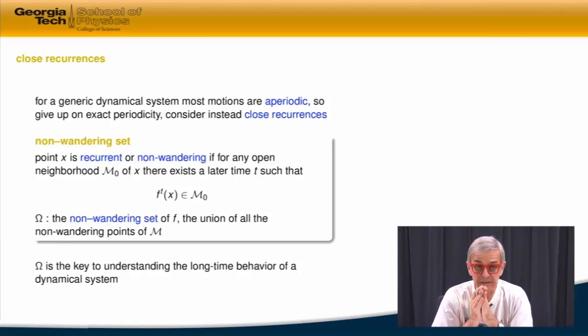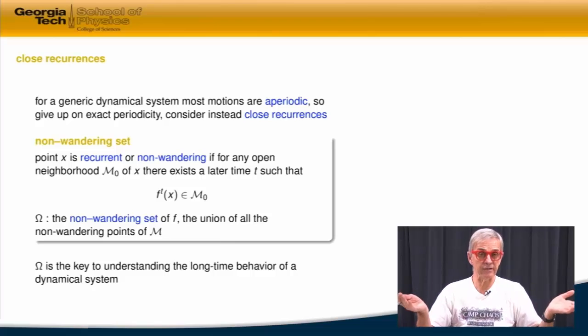The generic behavior in generic dynamical system is that you can hope not for exact periodicity, that's a rare probability zero event, but you can hope for close recurrences. And for government work, that's good enough.